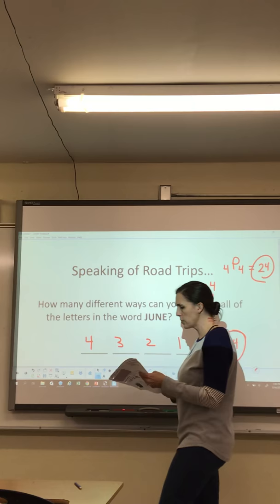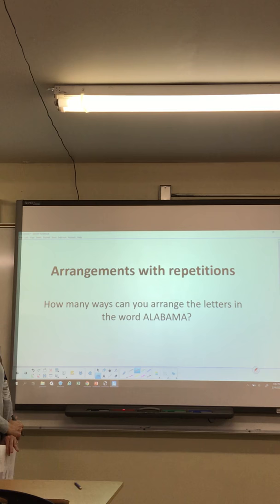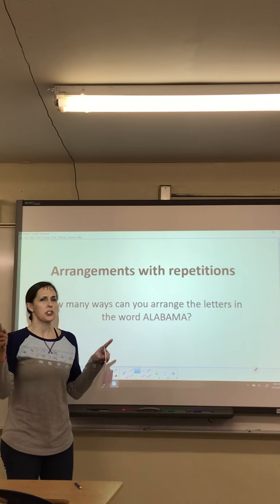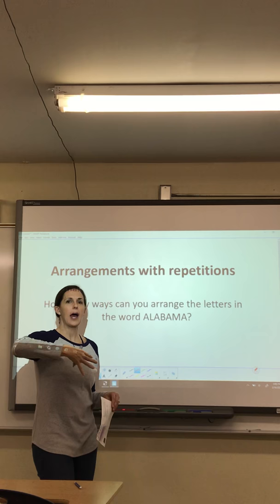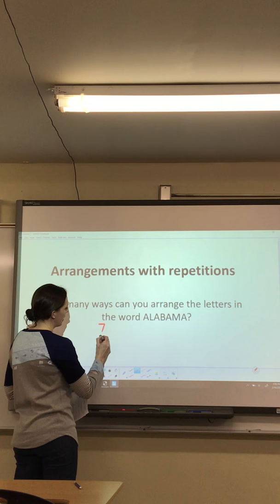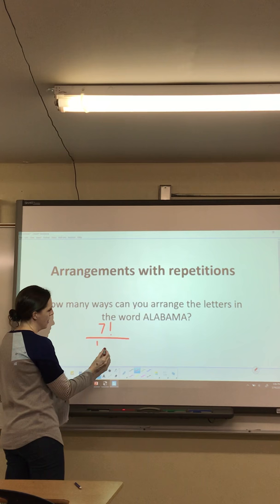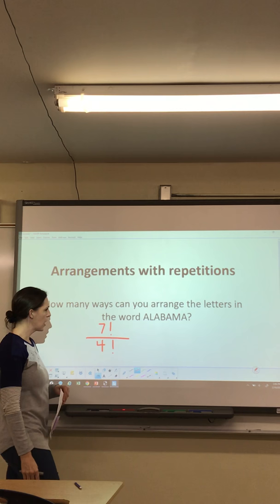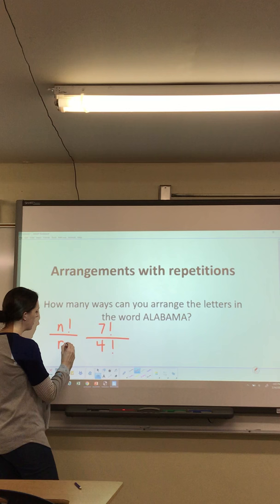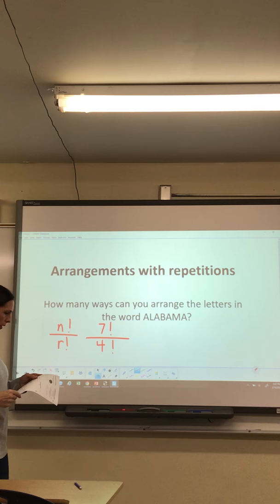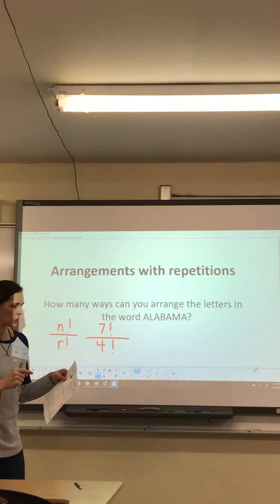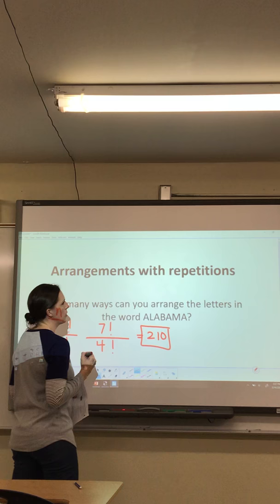Now let's talk about arranging with repetition. Take Alabama — it has the letter A repeated four times, so switching two A's around still spells Alabama. We have seven letters total, so we could do 7 factorial, but we take out the repeats. The formula is 7 factorial divided by 4 factorial to remove the repeated A's. Practice this in your calculator — you may need parentheses for the denominator. You should get 210.